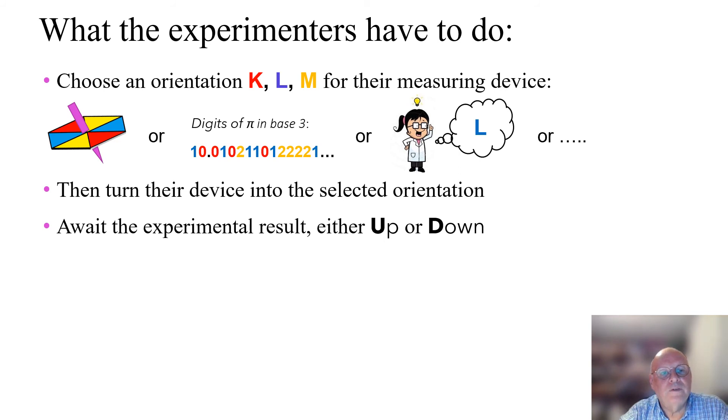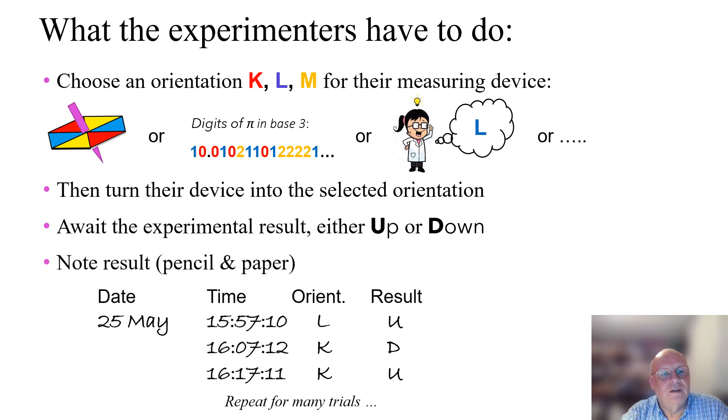The next task is to turn their device into the selected orientation. Then they have to wait for the experimental result. This will be either up or down and might be displayed as the appropriate word lit up on a panel. Finally, they have to note down the experimental result. They could just do this by noting it in pencil and paper in their logbook, and they would have to repeat this for many trials.